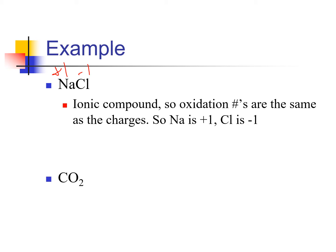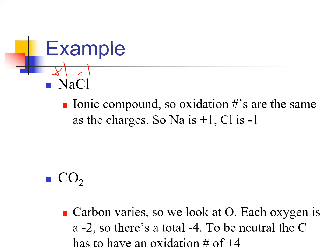CO2 is a little trickier because it's a molecular compound. Carbon varies — it's not one of our 'always' things — so we look at the oxygen. Oxygen will always be negative two because it's not a peroxide ion. There are two of them, so there's a total of four negatives. Carbon dioxide is neutral, so all oxidation numbers must add up to zero. Since we have negative four, the carbon must have plus four as its oxidation number.